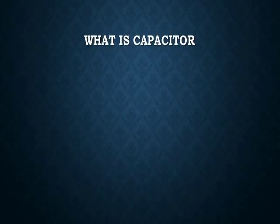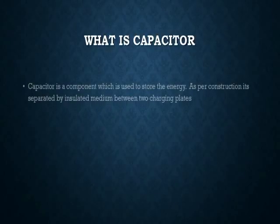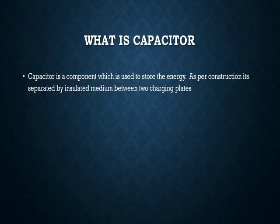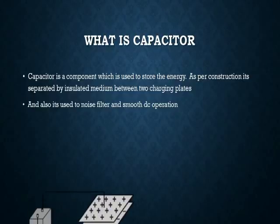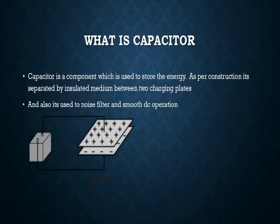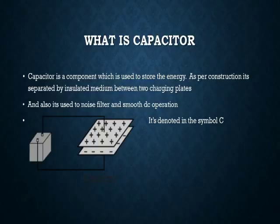What is a capacitor? A capacitor is an element which is used to store energy. As per its construction, it consists of two conducting plates separated by an insulating medium. It is also used in noise filters and for smooth DC operation in DC converters and rectifier units. As you can see in the drawing, the two charging plates — plus and minus — are separated by the insulating medium. It is denoted by the symbol C and its unit is farad.